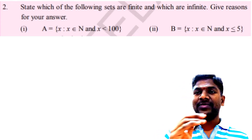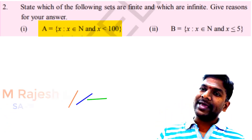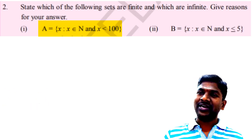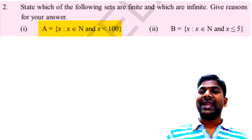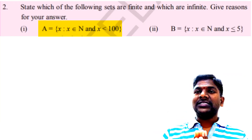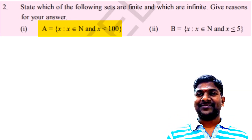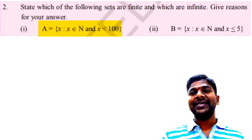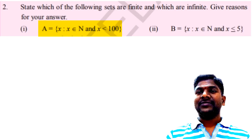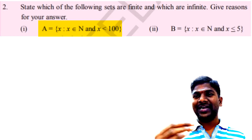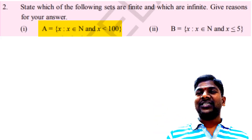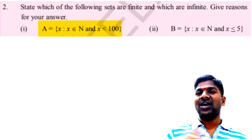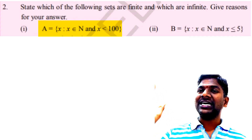The first question: A = {X such that X belongs to N and X less than 100}. We have to say whether it is a finite or infinite set. All elements of set A are denoted by X, where X is a natural number. We do not write all natural numbers — only those less than 100. Note that 100 is not included because the condition is X less than 100, not X less than or equal to 100.